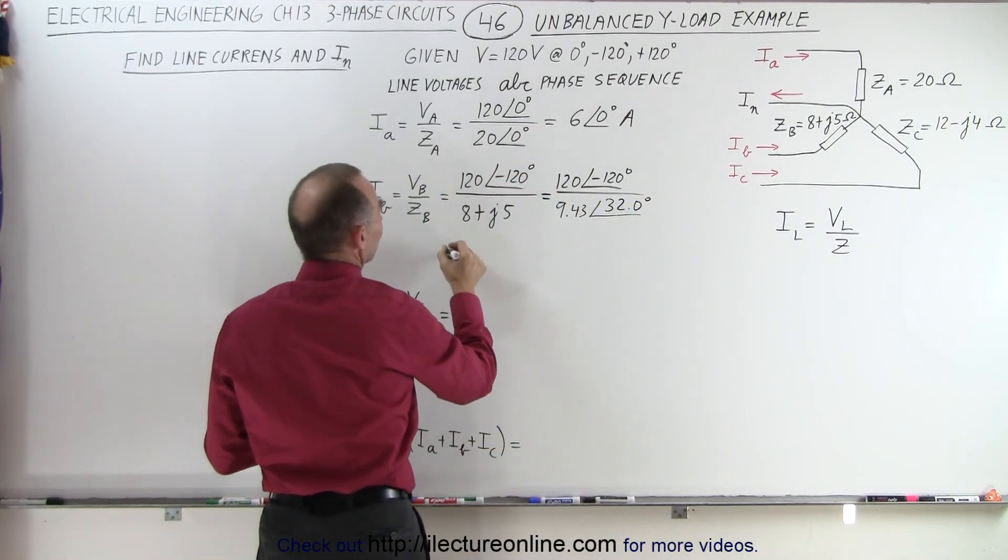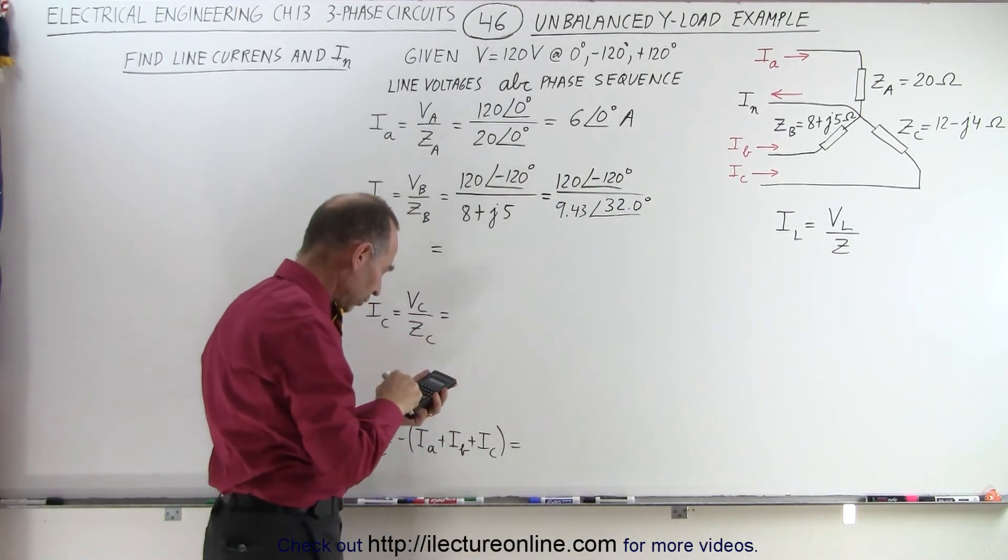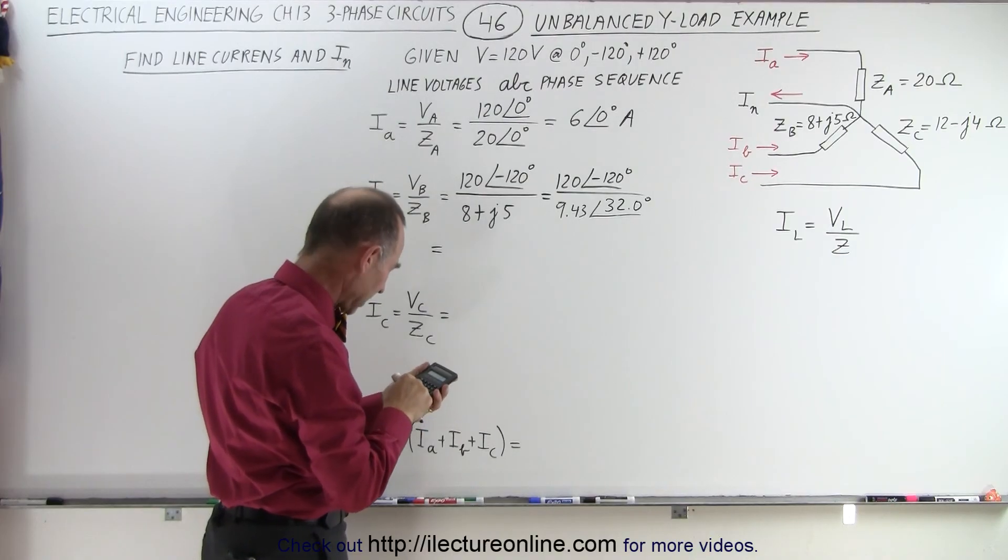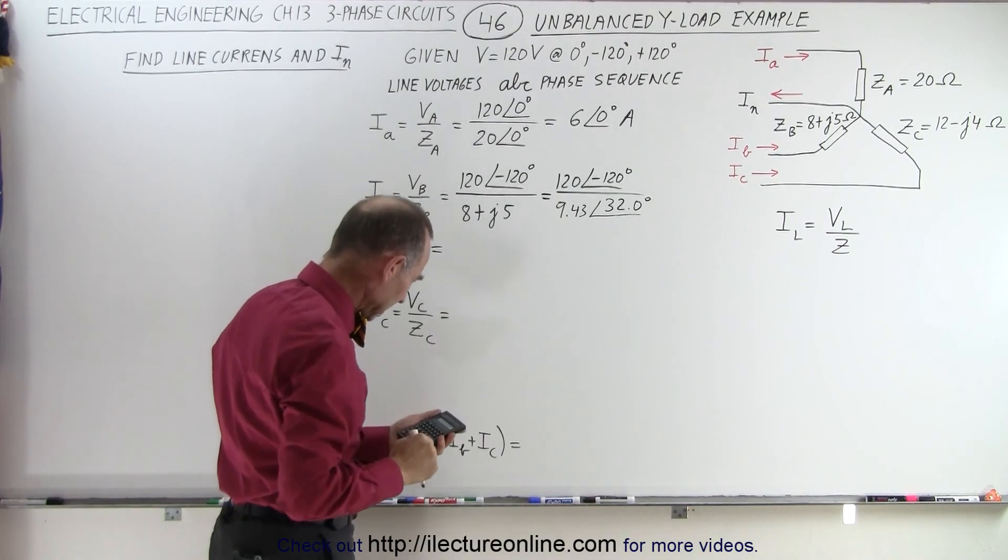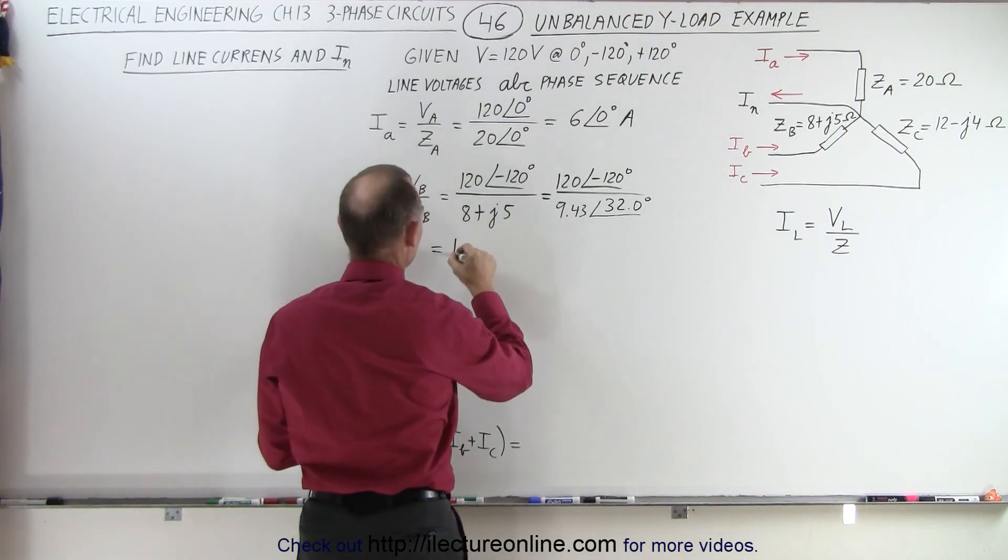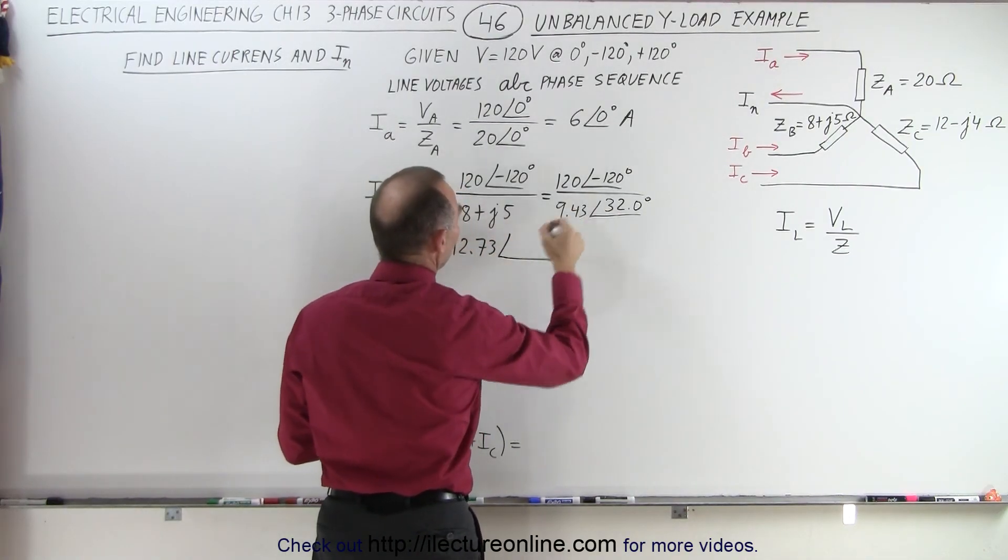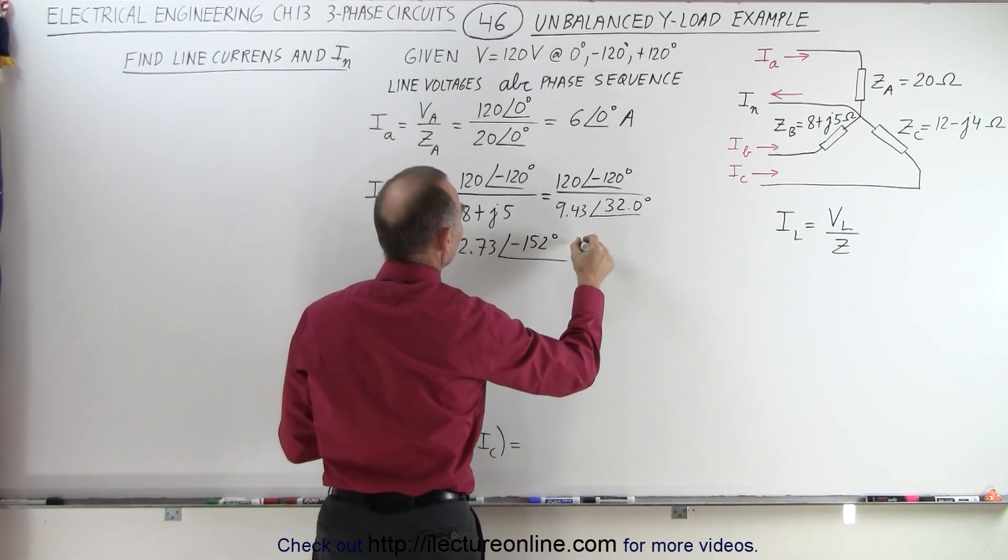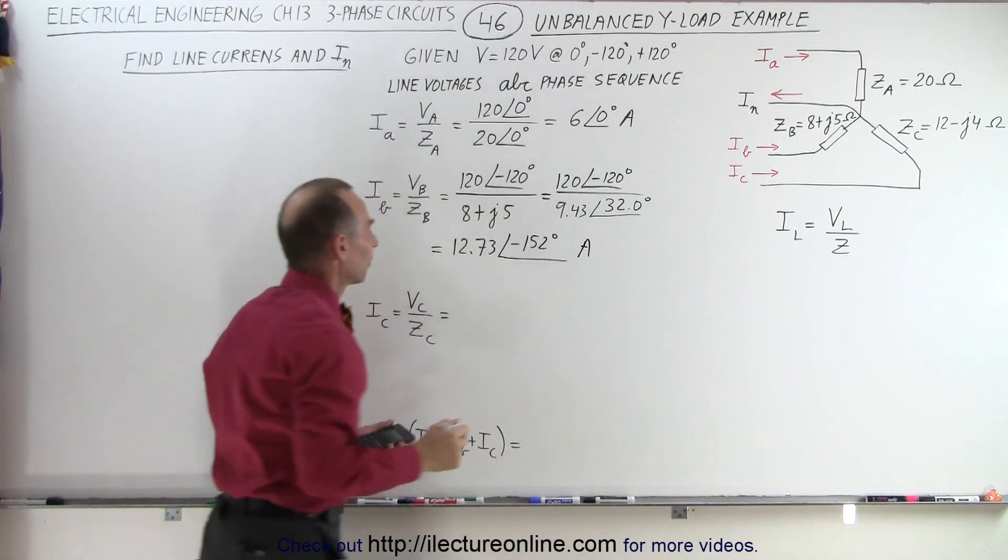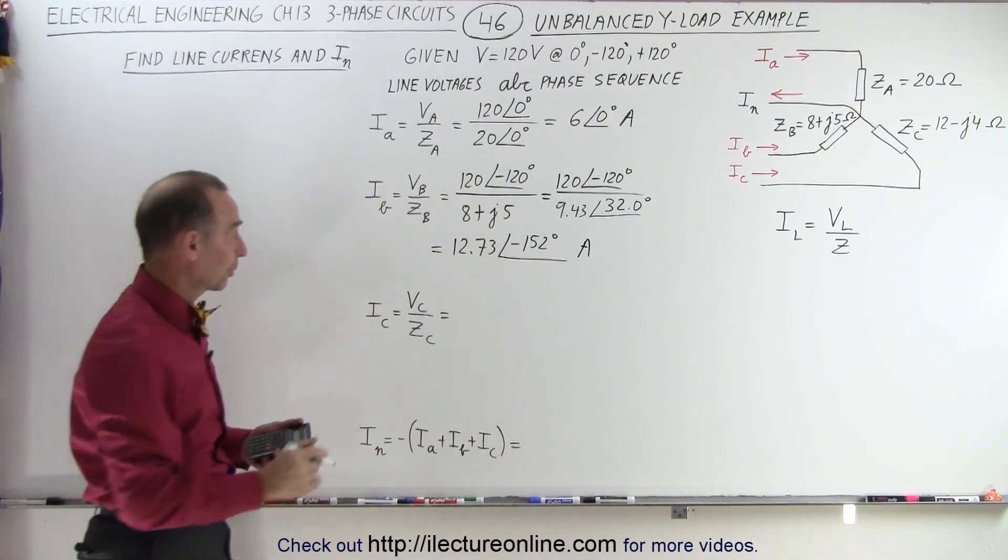And so that would be equal to 120 divided by 9.43. That gives us 12.73 with a phase angle of minus 152 degrees, and that would be in terms of amps. So that's our second current. Our third current, V sub C.